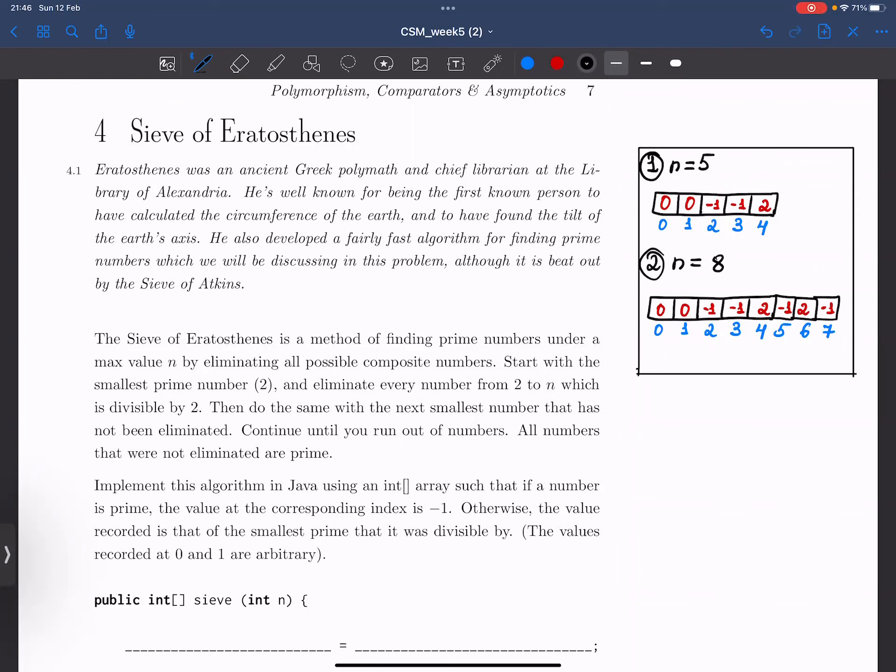Then we do the same with the next smallest number that has not yet been eliminated, which is going to be 3. And we continue this process until we run out of numbers, and all numbers that were not eliminated are therefore not composite and prime.